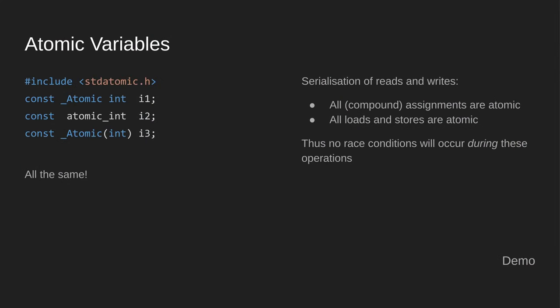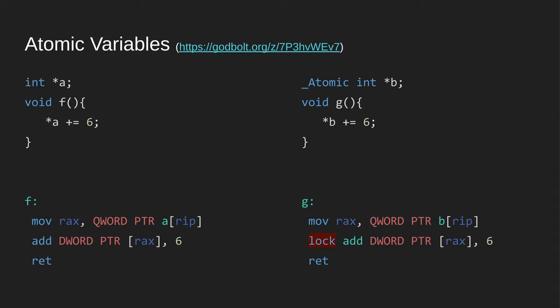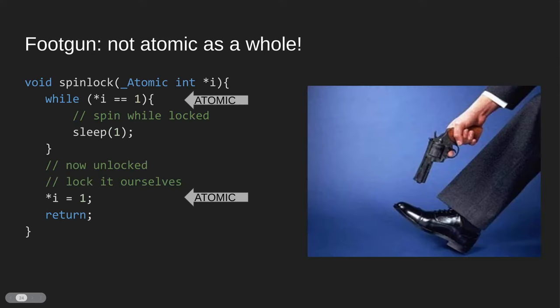Now I thought it would be interesting to show what the assembly looks like. Here is x86 — Intel or AMD processors. Above we have C code and below the compiler-generated assembly. They're pretty much equal except on the right-hand side we're using an atomic variable. x86 has a lock prefix, so instead of a pthread_mutex_lock we just have it right in the assembly. I added a link which contains just this code so you can play around with it after I publish this material.